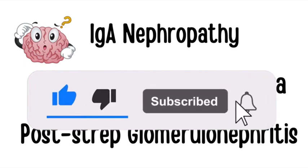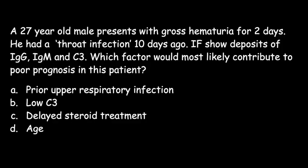A 27-year-old male presents with gross hematuria for two days. He had a throat infection 10 days ago. Immunofluorescence shows deposits of IgG, IgM, and C3. Which factor would most likely contribute to poor prognosis: A) prior upper respiratory infection, B) low C3, C) delayed steroid treatment, or D) being an adult? This patient has post-strep glomerulonephritis and the answer is D — being an adult.